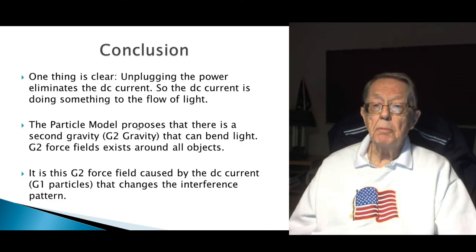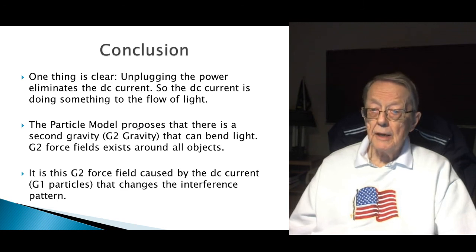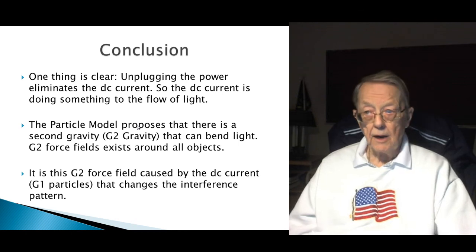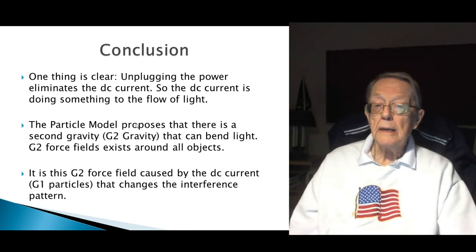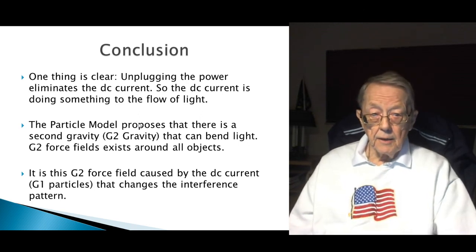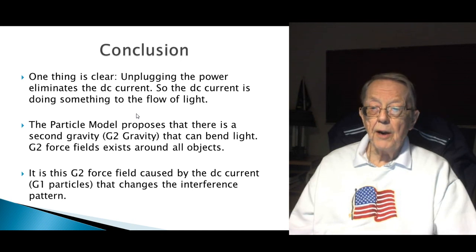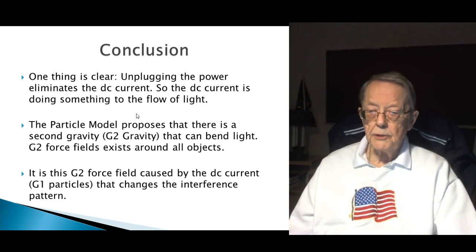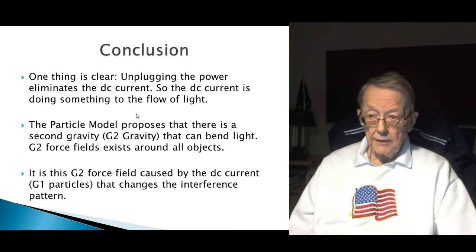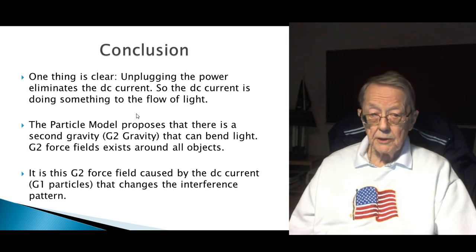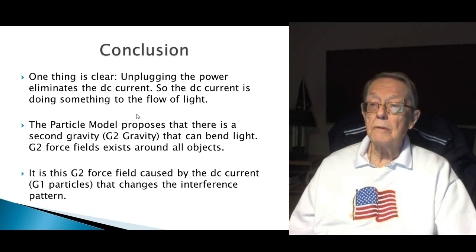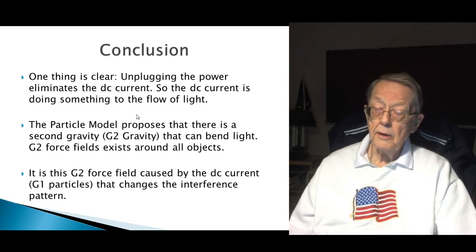So, our conclusion, one thing is clear. Unplugging the power eliminates the DC current. So, the DC current is doing something to the flow of light. Now, you could argue you can make up your own model and come up with your own idea. But that's the key. The particle model proposes that there is a second gravity, G2 gravity, that can bend light. The G2 force field exists around all objects to some degree or another depending on the content, the atomic structures, the atoms, the particles in that object. It is this G2 force field caused by the DC current, which is nothing more than the flow of G1 particles through the circuit, that changes the interference pattern from being a pattern to two bars.